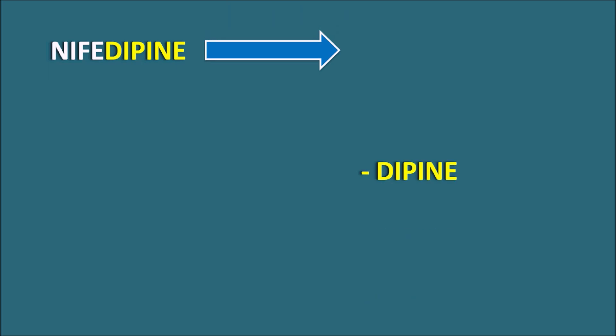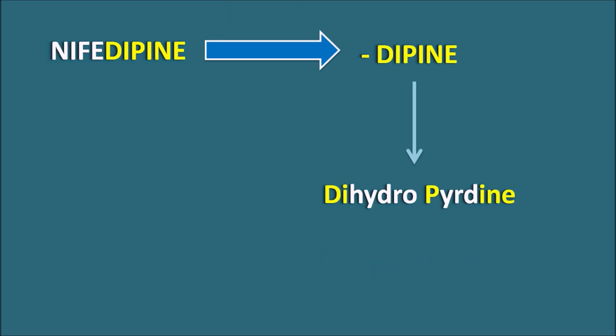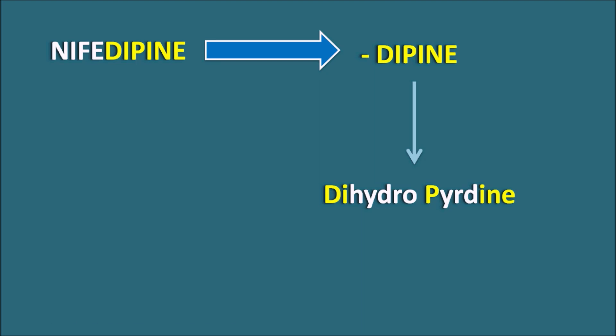Within the name we can observe the suffix '-dipine'. This suffix indicates the drug is a dihydropyridine. So '-dipine' indicates it is a dihydropyridine derivative. Nifedipine is a calcium channel blocker, commonly known as CCB. We have three types of calcium channel blockers: diphenylalkylamines, benzothiazepines, and dihydropyridines. Nifedipine is a dihydropyridine derivative which acts as a calcium channel blocker on the vascular smooth muscle.